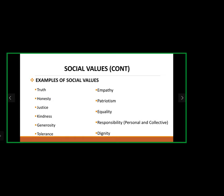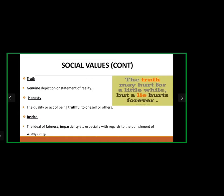Examples of social values include: truth, honesty, justice, kindness, generosity, tolerance, empathy, patriotism, equality, responsibility, and dignity. Truth is a genuine depiction or statement of reality. As the quote states: 'The truth may hurt a little while, but a lie hurts forever' — it's better to tell the truth than to lie.